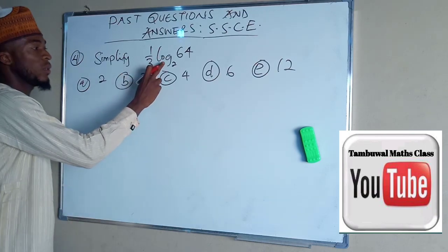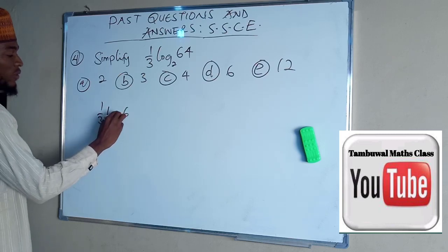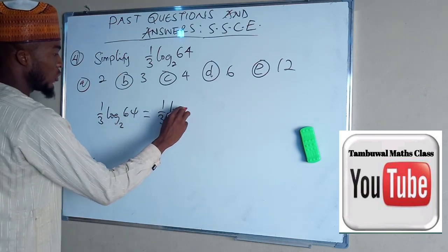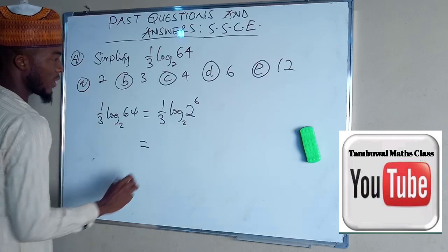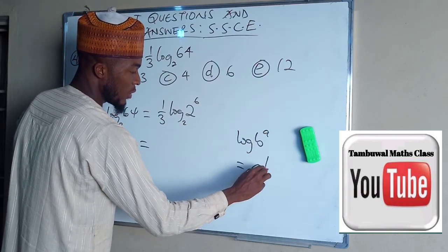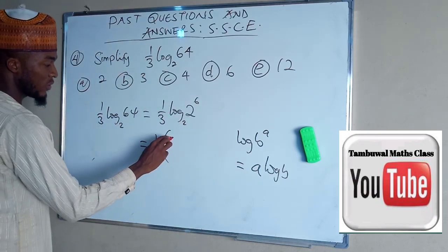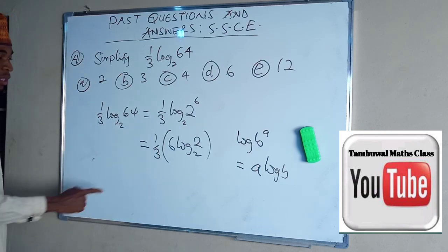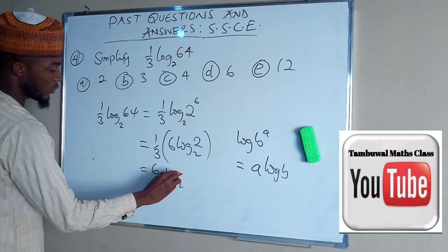Question number 4. We are asked to simplify 1 over 3 log of 64 base 2. This is the same thing as 1 over 3 log 2 power 6, because 2 power 6 is 64. And this is the same thing as, you know, if you have log B power A, this is the same thing as A log B. So we apply that law in this. So we have 1 over 3, 6 log 2 base 2. If you simplify this again, you end up having 6 divided by 3 log 2 base 2.